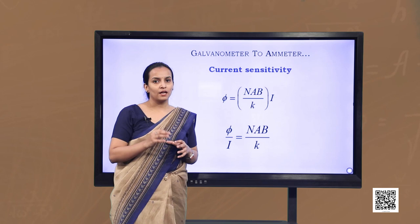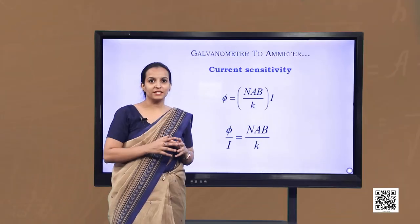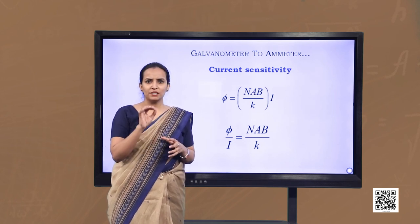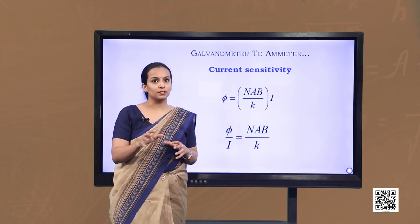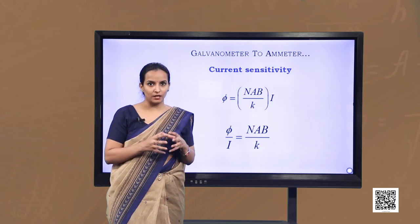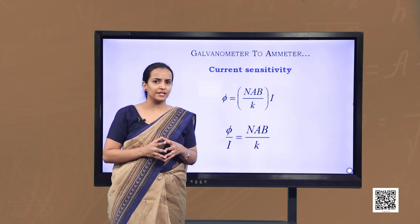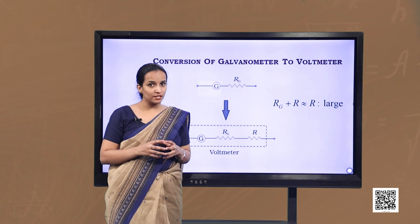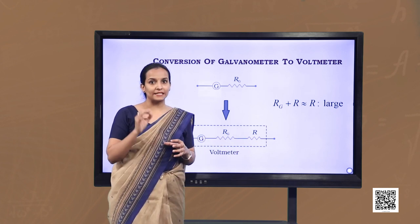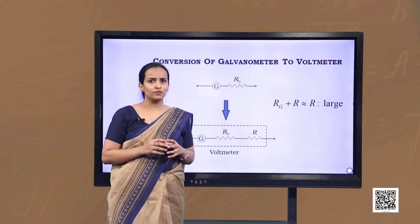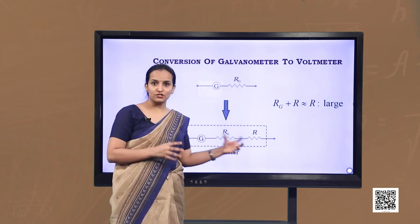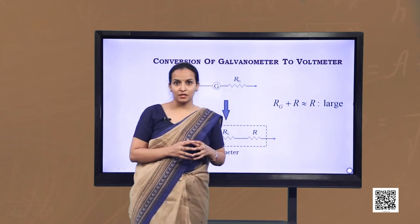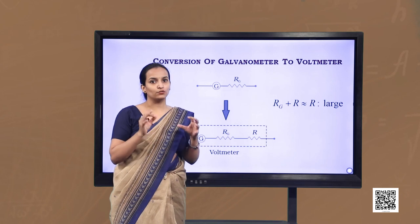Similarly, a galvanometer can be converted into a voltmeter. A voltmeter is connected in parallel to the component whose voltage needs to be measured, so it must draw very little current to avoid disturbing the original setup. We wish to keep the disturbance below 1%. To ensure this, a large resistance R is connected in series with the galvanometer. The resistance of the voltmeter equals the sum of the galvanometer resistance and this large series resistance, resulting in a high total resistance.